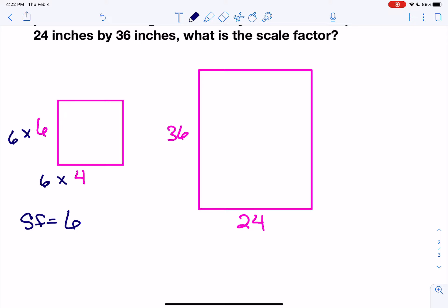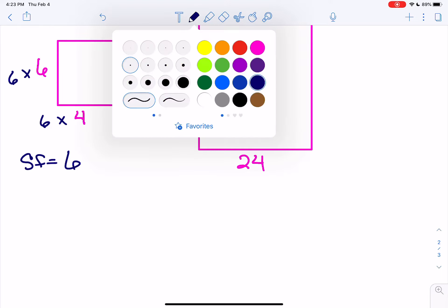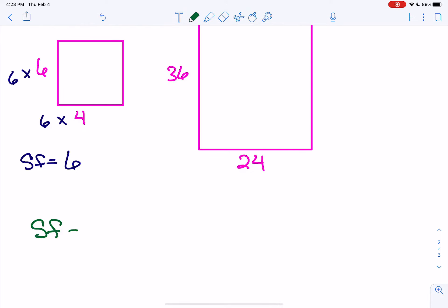Okay? So if you can see it, sometimes you'll be able to see some of these in your head and just know, oh, 4 times 6 is 24, 6 times 6 is 36. The scale factor is 6. Now, if you don't see it right away, if you don't recognize the numbers and their multiples, then go back to the original. Scale factor equals new over original. And then pick a side. You know, you can pick the 36 and 6. The new is 36. The original was 6. 36 divided by 6 is 6. You'll still get the same answer.